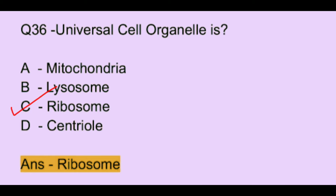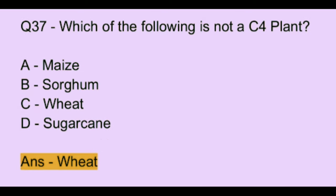Question number 37. Which of the following is not a C4 plant? Option A: maize. Option B: sorghum. Option C: wheat. Option D: sugarcane. The correct answer is option C, which is wheat.